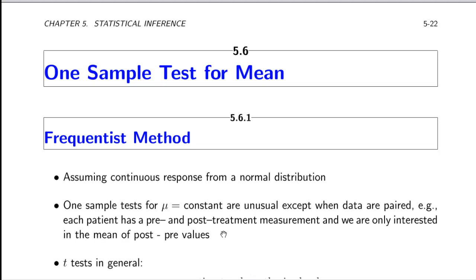That particular sort of test — testing a mean against a constant — is actually somewhat unusual except when you have paired data, such as pre- and post-measurements, where you might want to test against a difference of zero. We'll talk about paired data at the end of this session.